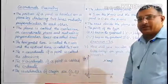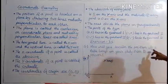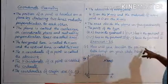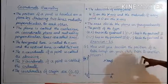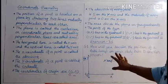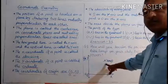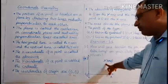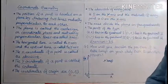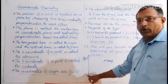Now let us discuss Exercise 3.1. The question is: how will you describe the position of a table lamp on your study table to another person? To describe the position of a table lamp placed on the table, let us consider the table as a plane. The X axis and Y axis are the two edges of the table, and the point at the corner is called the origin.